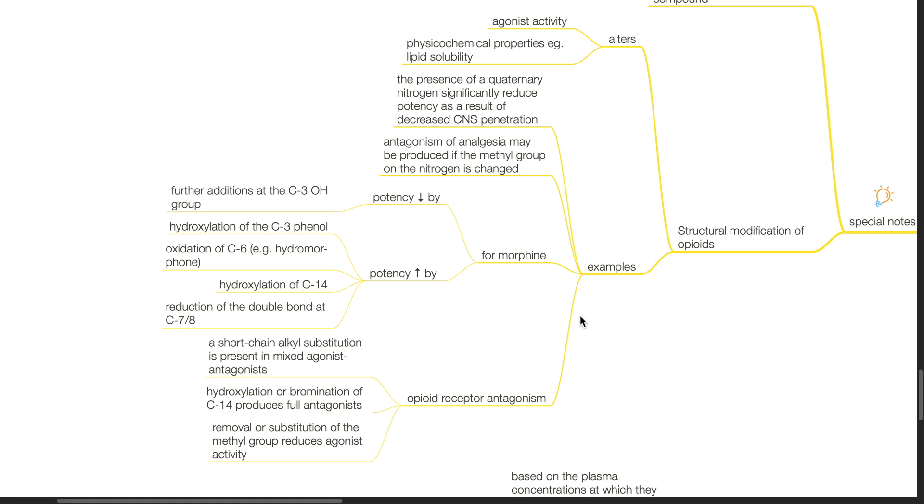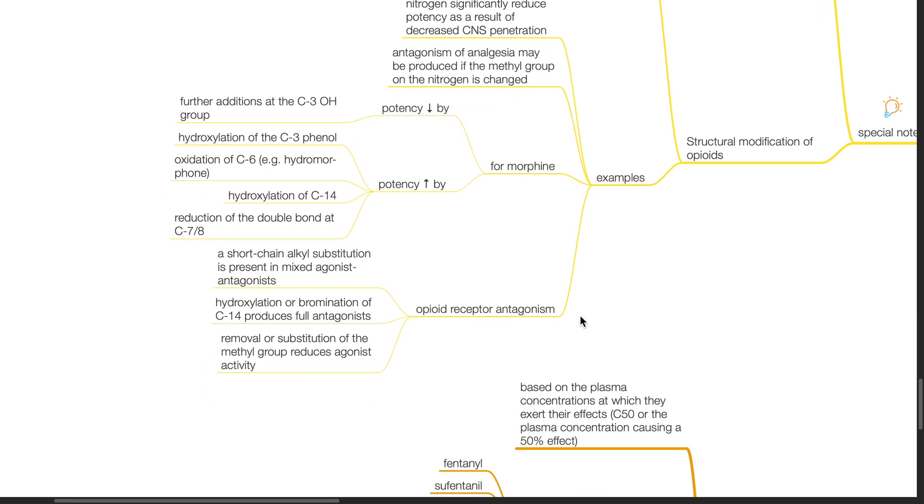For opioid receptor antagonism, a short-chain alkyl substitution is present in mixed agonist antagonist. Hydroxylation or bromination of C14 produces full antagonist. Removal or substitution of the methyl group reduces agonist activity.